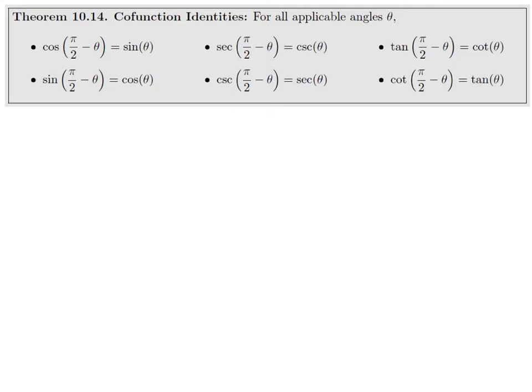The co-function identities are also very useful. Cosine of π/2 minus theta equals sine of theta. These are called co-functions because they involve complementary angles. Theta and π/2 minus theta add up to π/2. Examples of complementary angles would be 30 degrees and 60 degrees, or 40 degrees and 50 degrees, or in radians, π/3 and π/6. They all add up to 90 degrees or π/2. All these co-function identities say that cosine of the first equals sine of the second, and vice versa. Cosine of 30 degrees equals sine of 60 degrees, cosine of 40 equals sine of 50, etc.